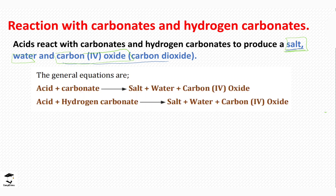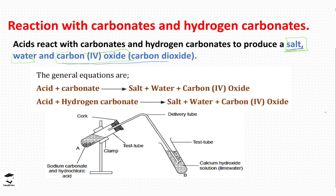The general equation is the same for both reactions of acids with carbonates and hydrogen carbonates. For example, when you react sodium carbonate with hydrochloric acid, you will notice effervescence — there is production of bubbles. These bubbles are collected through a delivery tube, which is connected to another test tube containing lime water.